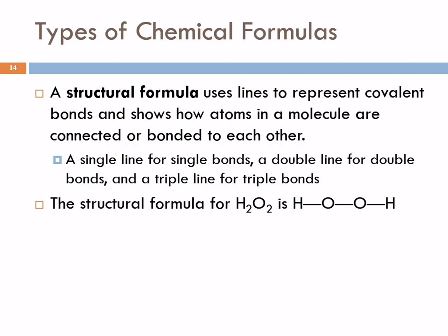Another type of formula is a structural formula. We use lines to represent covalent bonds, and this shows us how the atoms are connected, what order they're connected in. Here's a structural formula for hydrogen peroxide, H2O2. This shows that one hydrogen is bonded to this oxygen, which is bonded to another oxygen, and that one's bonded to the other hydrogen.